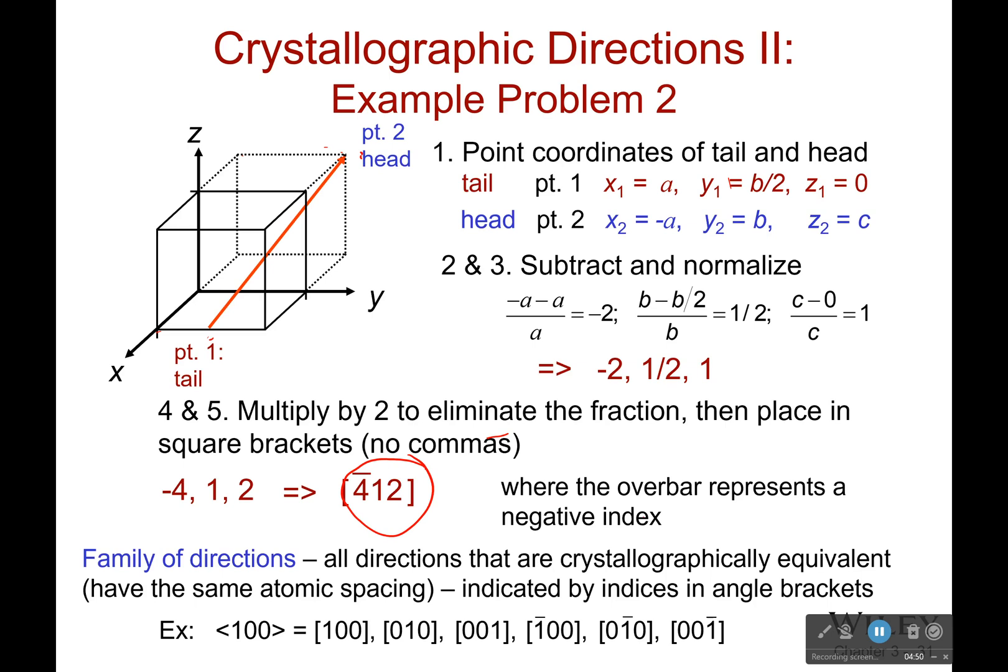So honestly, if I'm doing negative 4, 1, 2, well, honestly, I could do the same exact thing in the reverse, which would simply be 4, negative 1, and negative 2. And that would give me the exact same spot.